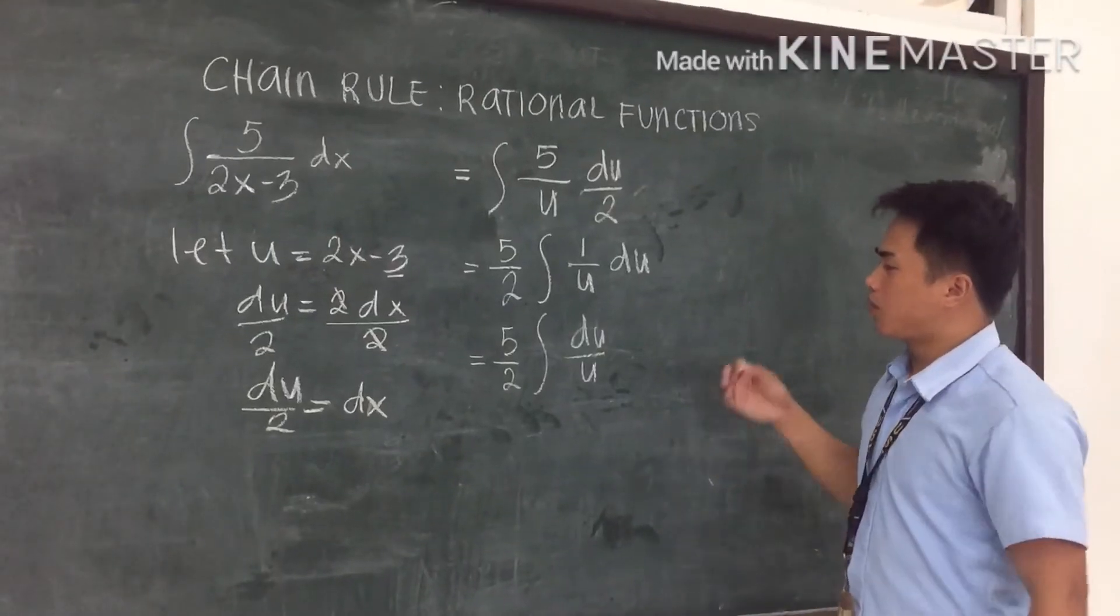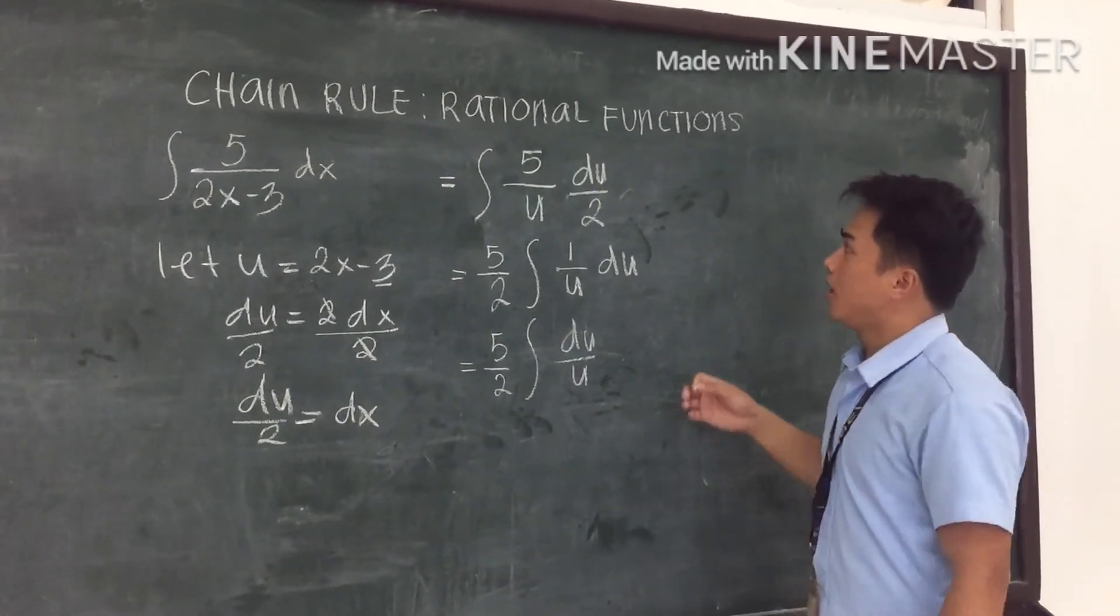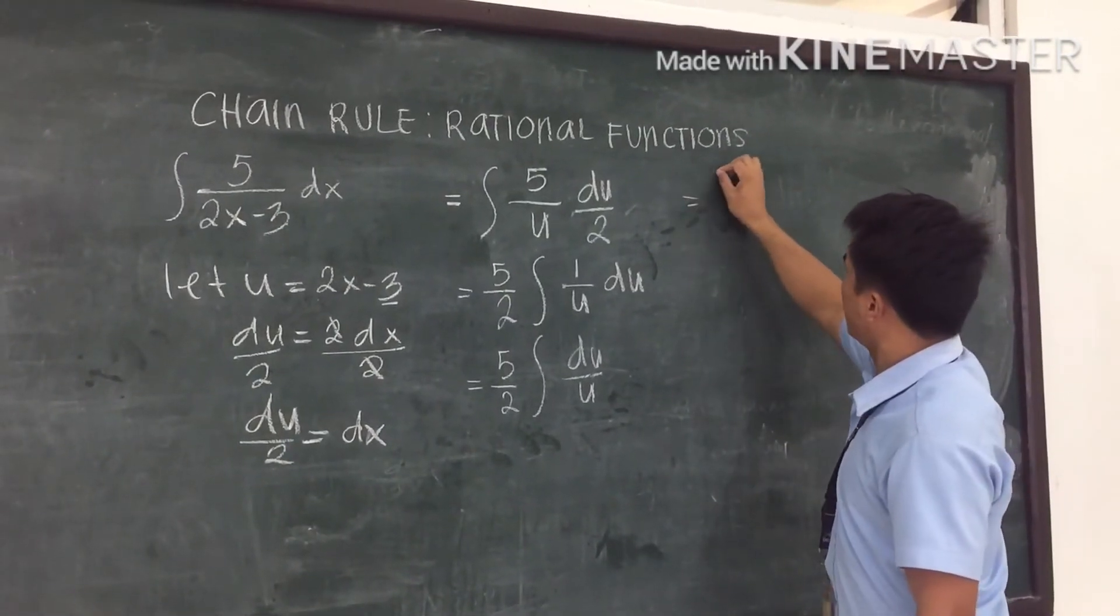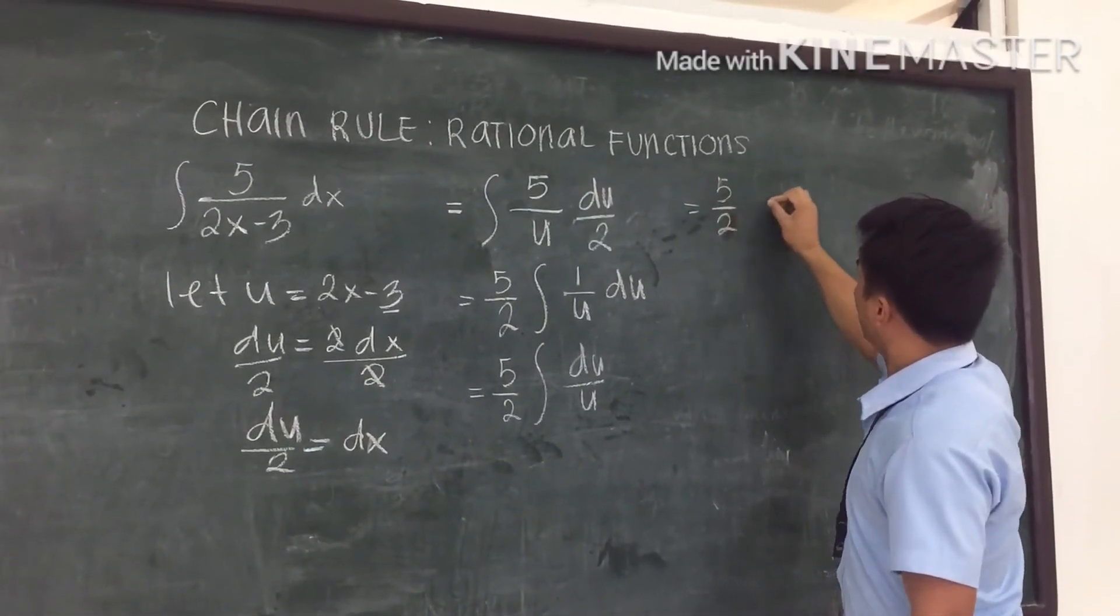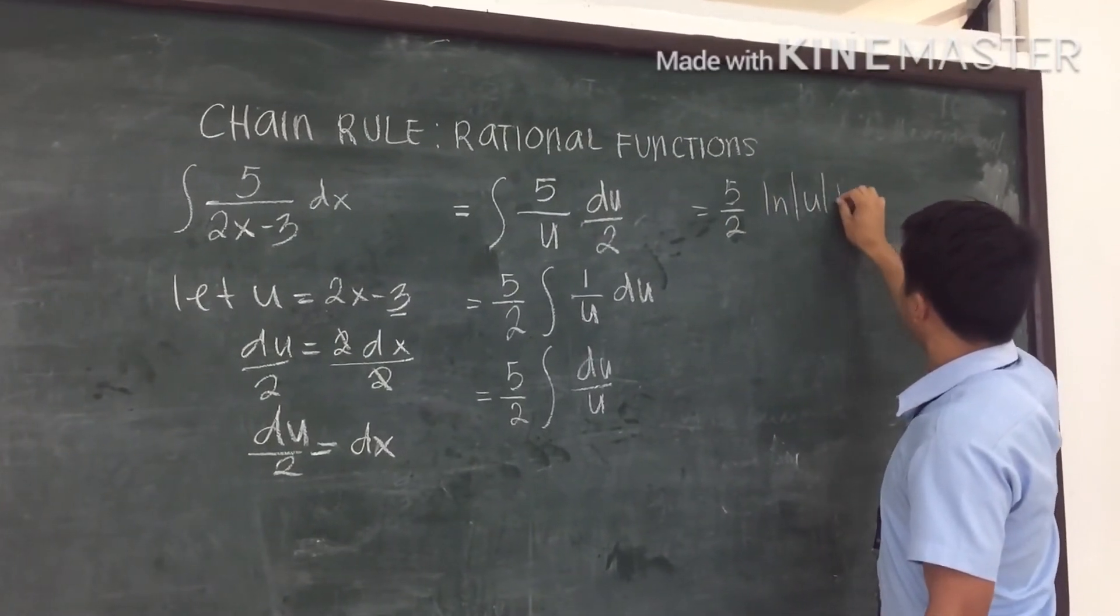Since we came up with this solution, we know that du over u is ln absolute u plus c. So copy the 5 over 2 and ln absolute u plus c.